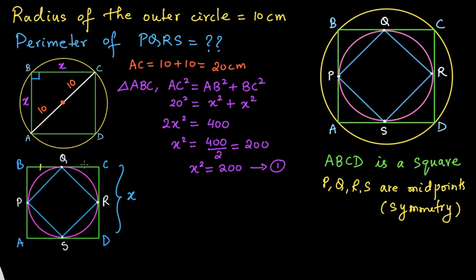Because P, Q, R, S are midpoints, each half-side equals x/2. So PB equals x/2 and BQ equals x/2. Angle B is 90 degrees, so we have a right angle triangle PBQ. Let us take the side length PQ as a, and apply Pythagoras theorem to this triangle.